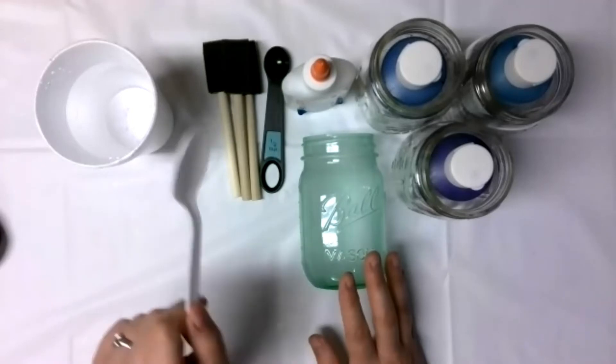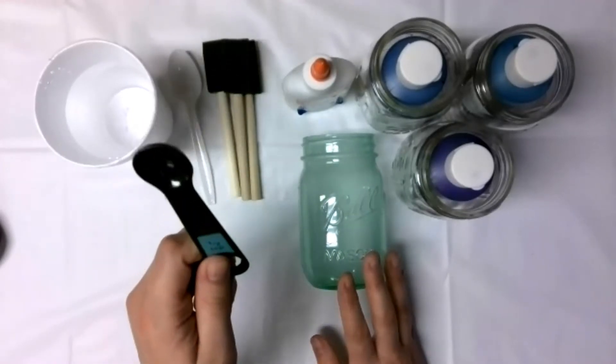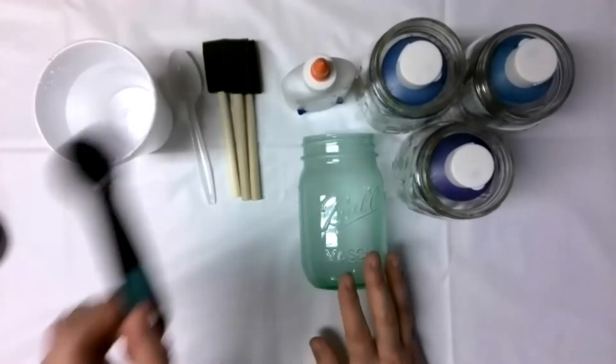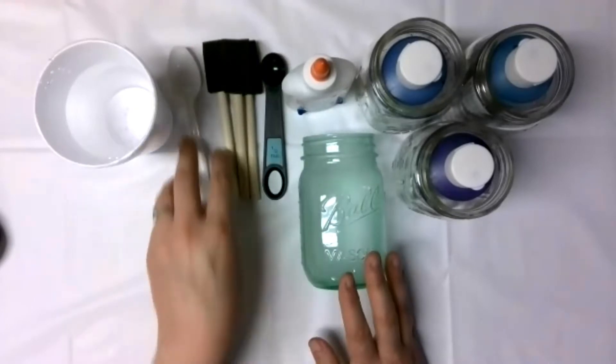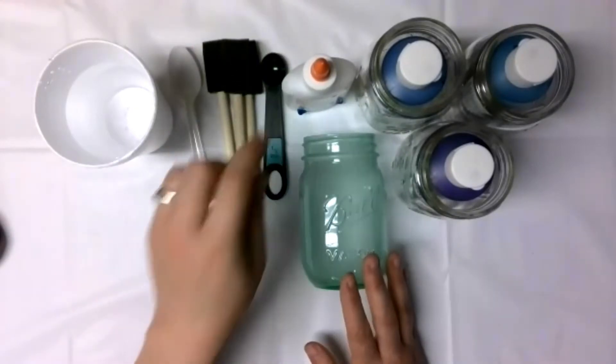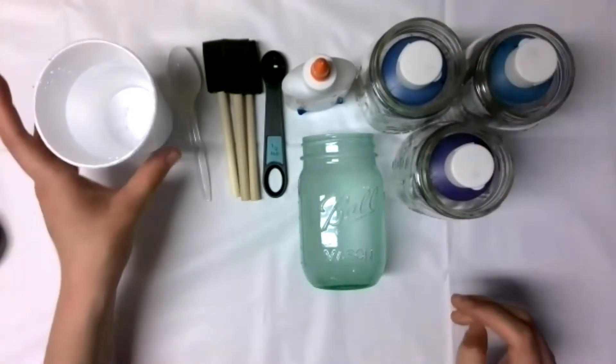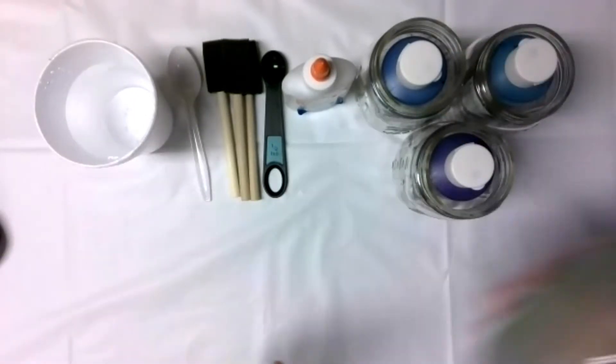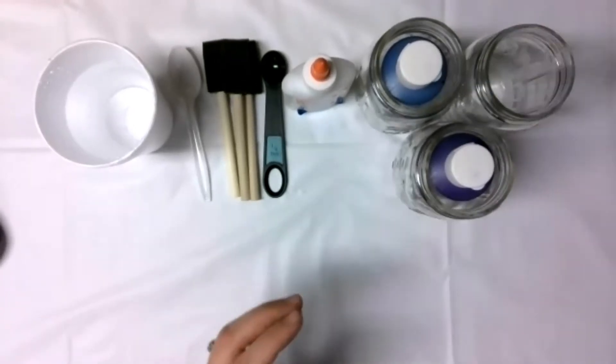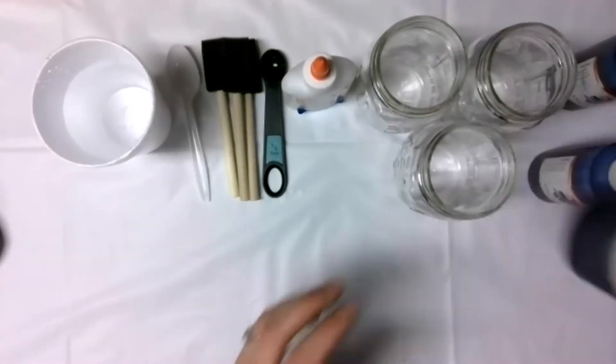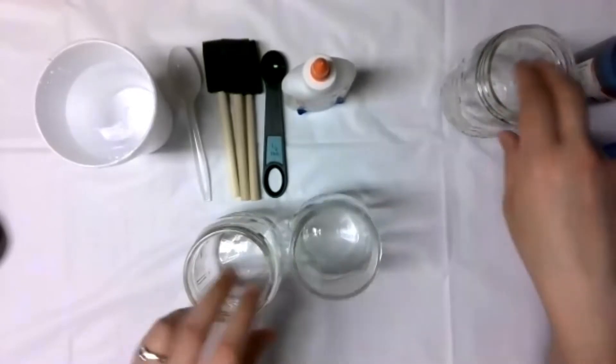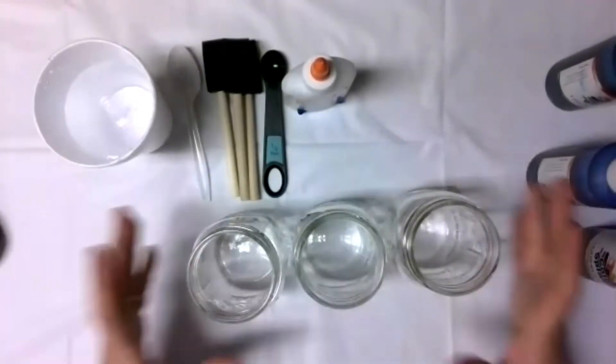This is so that when I am using the measuring spoon to measure out the glue I can scrape all the glue out of the measuring spoon. So I'm going to set our sample aside and then I'm going to show you how to make the sea glass mason jars.